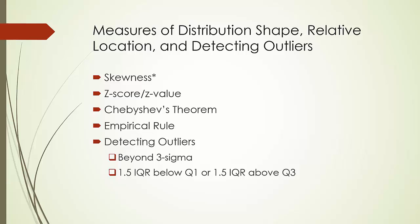We will not provide technical details about skewness here — computation of it is usually done with software packages. To measure the relative location of values within a data set, we usually use z-scores or z-values, sometimes also called standardized values. A z-score is computed by the deviation from the mean divided by the standard deviation. In other words, a z-score describes how many standard deviations a value is away from the mean. One misconception is that some students think z-scores are only associated with normal distributions — z-scores can be calculated for any distribution.